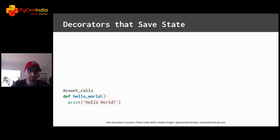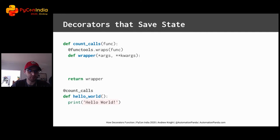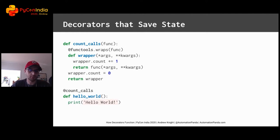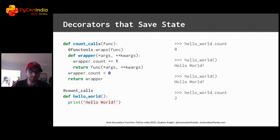But wait, there's even more. Decorators can be used to save state. Here's a decorator that will count the number of times a function is called. count_calls has the standard decorator structure. Outside the wrapper, a count attribute is initialized to zero — this attribute is added to the wrapper function object itself. In Python, we can dynamically add attributes to any object. Inside the wrapper, the count is incremented before calling the inner function. The count value will persist across multiple calls because it's associated with the wrapper function object itself. Initially the hello world count value is zero, and after making two calls the count value goes up as expected.